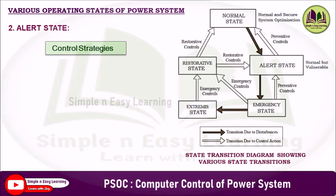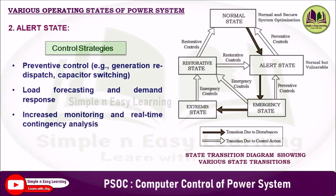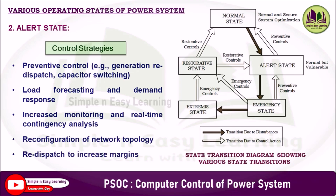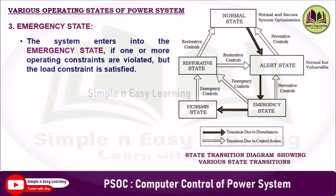Control strategies in the alert state include preventive control (for example, generation redispatch or capacitor switching to improve reactive power), load forecasting and demand response, increased monitoring and real-time contingency analysis, reconfiguration of network topology, and redispatch to increase margins.